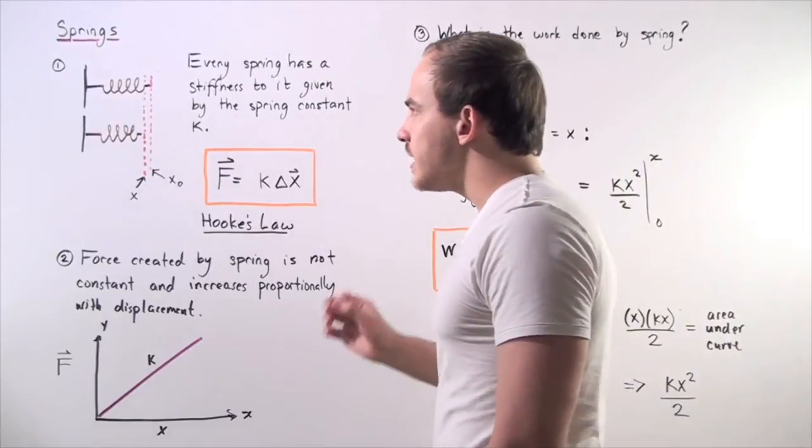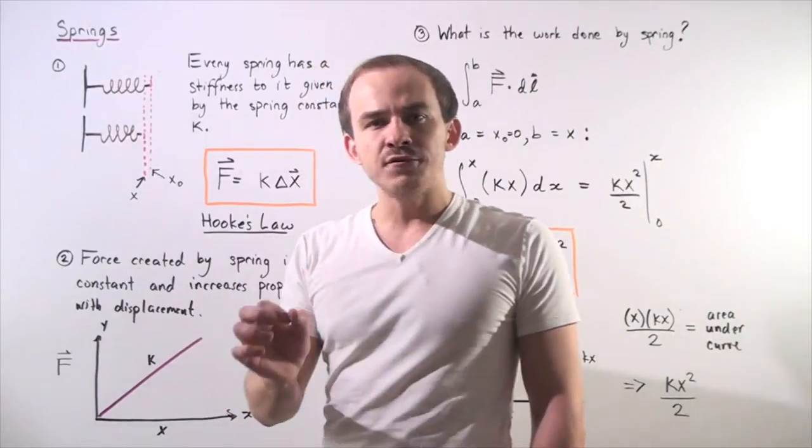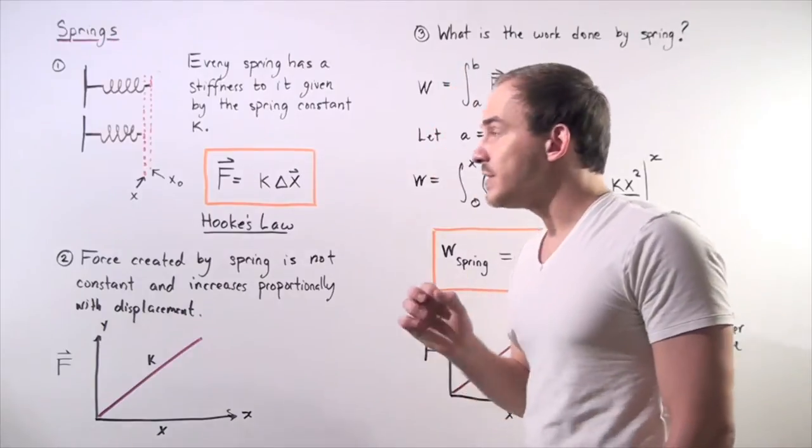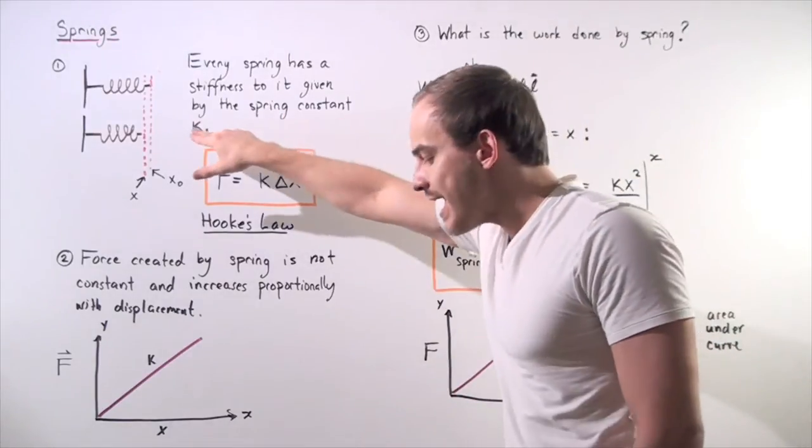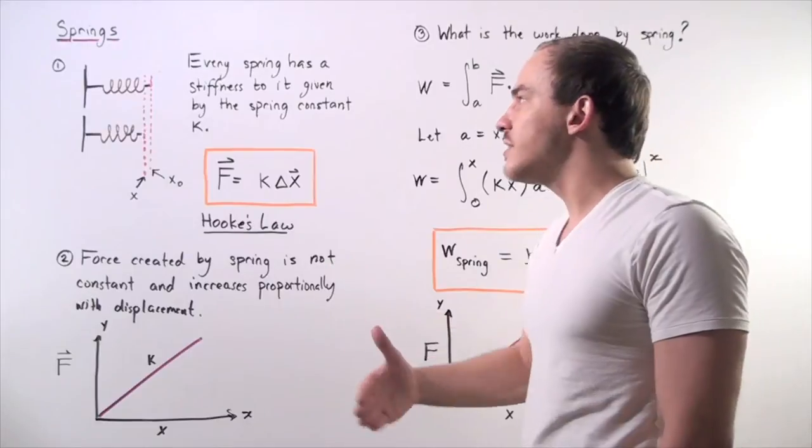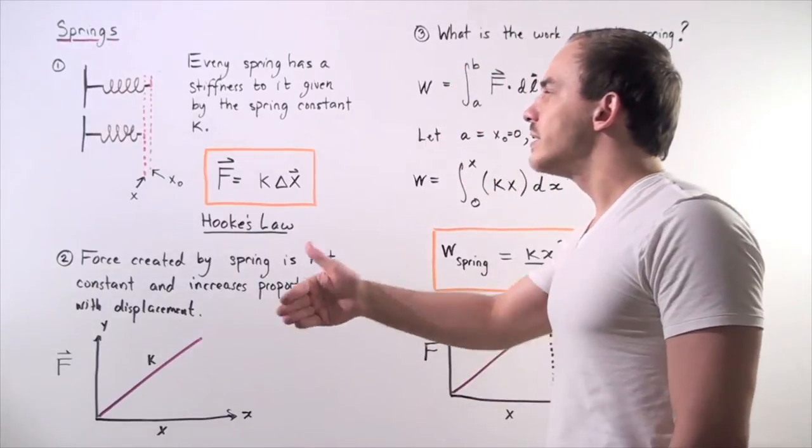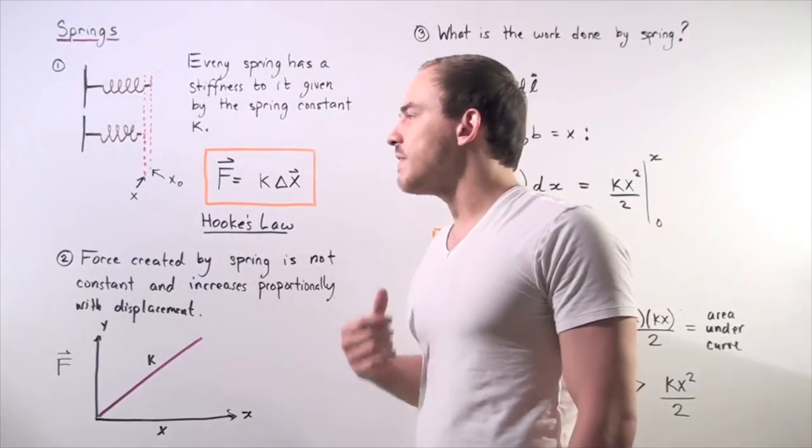Now recall that every single spring has a certain stiffness to it, and the stiffness depends on the spring constant k. So the higher the k, the more stiff our spring is. The lower the k, the less stiff our spring is.